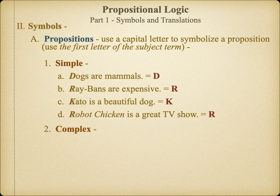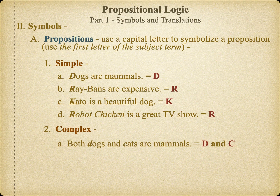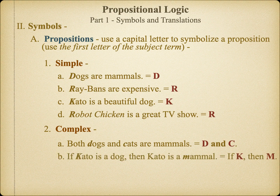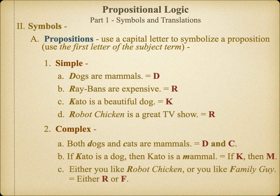We can do exactly the same thing for compound statements. First, we identify the subject term of each simple statement and use those letters as the symbols or variables to represent the complex statement. Notice that we've left the connector 'and' between the two propositions — we'll learn how to symbolize this logical operator in a moment. But suppose the subject of both statements started with the same letter. In that case, we move to the predicate of the second statement and use the first letter of it to represent that statement. It is essential that each statement has a unique variable, as it represents a distinct proposition.